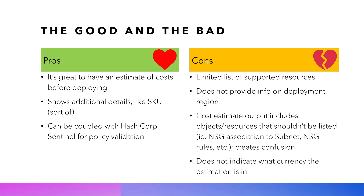What's really awesome is that this feature can be coupled with HashiCorp Sentinel to provide policy validation. For example, if the cost estimation engine determines a deployment will cost $200 a month, you can have a Sentinel policy that prevents anyone from deploying resources costing over $100 a month. There's a lot of great potential for cost governance and cost control by combining this feature with the policy engine.